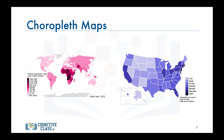The higher the measurement, the darker the color. The map to the left is a choropleth map of the world showing infant mortality rate per 1,000 births. The darker the color, the higher the infant mortality rate. According to the map, African countries have very high infant mortality rates, with some reporting a rate higher than 160 per 1,000 births.